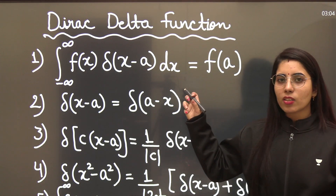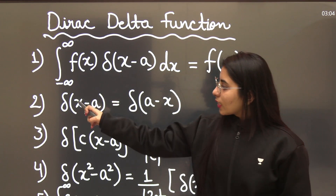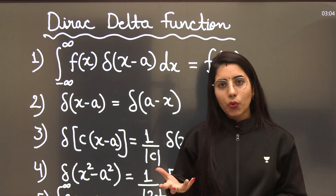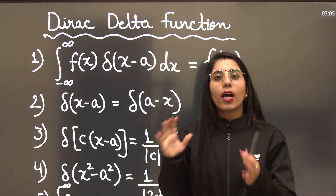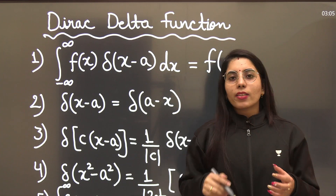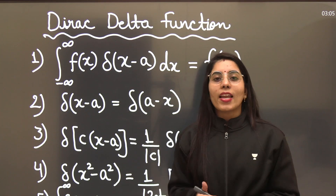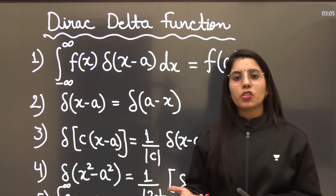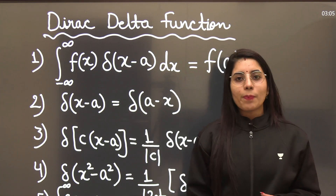If you have any question regarding the first property, you can ask in the comment section. The second property is: δ(x−a) = δ(a−x), which means the Dirac delta function is symmetric in nature. So if your answer is δ(x−a) but the option shows δ(a−x), you can confidently select it because these two are the same. You don't need to take a negative sign common — just know this property.